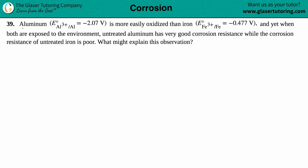Aluminum, element number 39, has a standard cell potential (E°) of negative 2.07 volts, making it more easily oxidized than iron, which has a cell potential of negative 0.477 volts. And yet, when both are exposed to the environment, untreated aluminum has very good corrosion resistance while the corrosion resistance of untreated iron is poor. What might explain this observation?